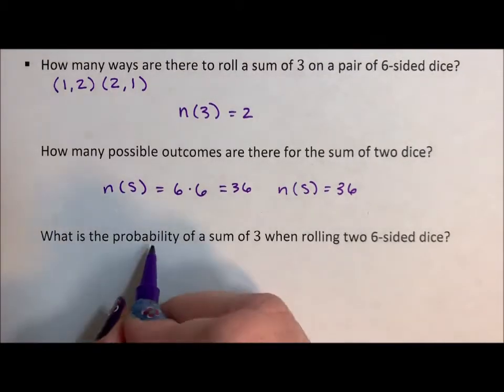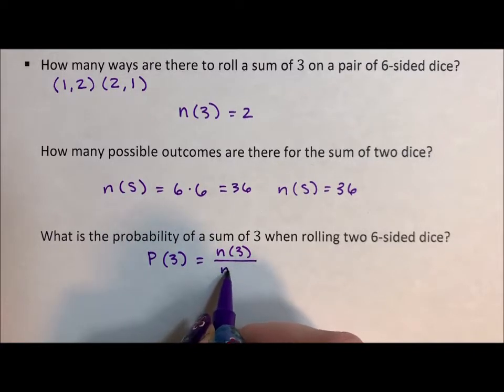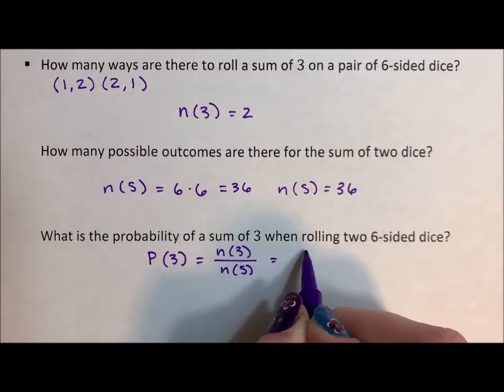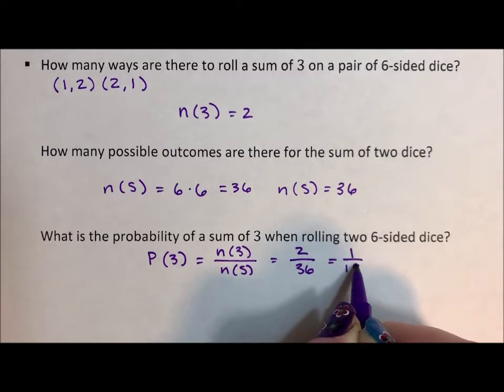What is the probability? So the probability of rolling a three is the number of three over the number in the sample space, which is two over 36, which reduces to one over 18.